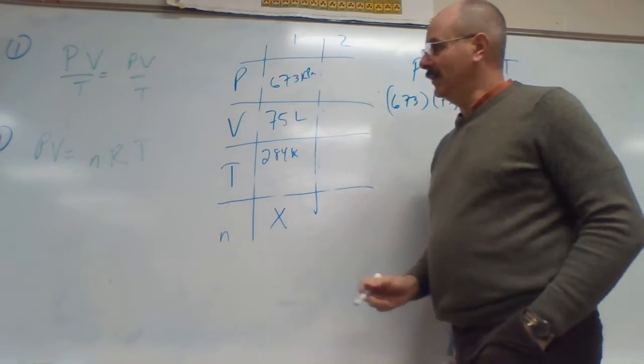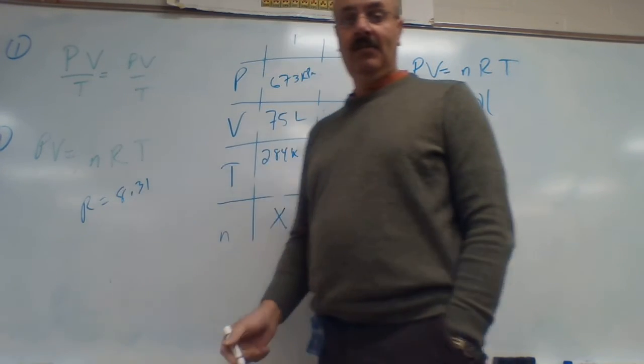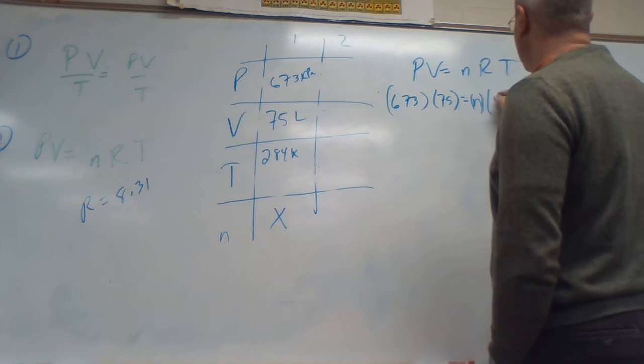Well, R was an ideal gas law, right? Which is a known constant. R equals 8.31. So that's the one we're going to use. So we're going to go 8.31.